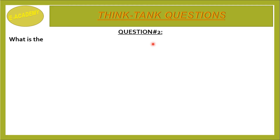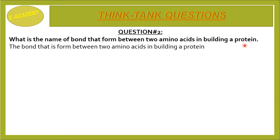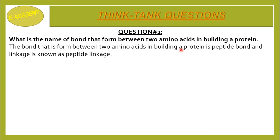Question No. 2: What is the name of the bond that is formed between two amino acids in building a protein? The bond formed between two amino acids in building a protein is the peptide bond, and the linkage is known as peptide linkage.